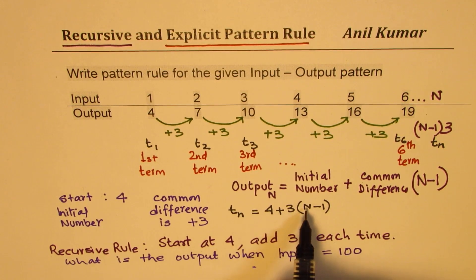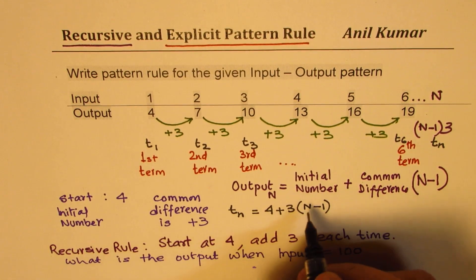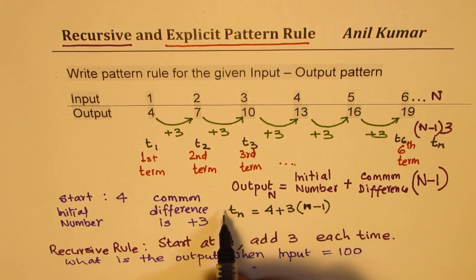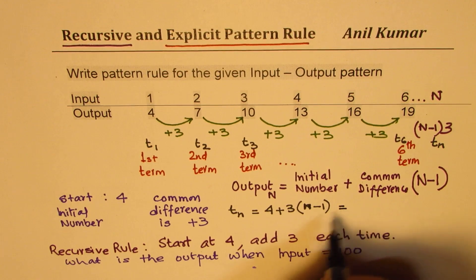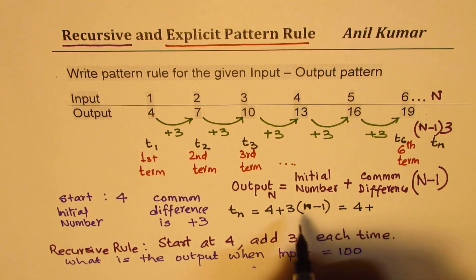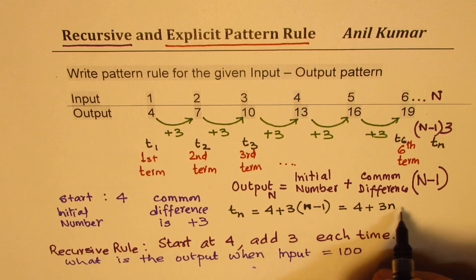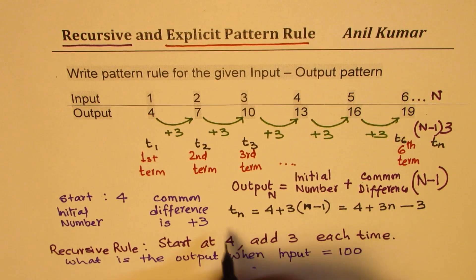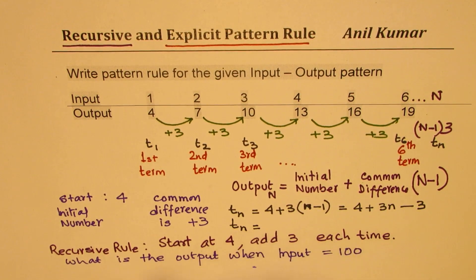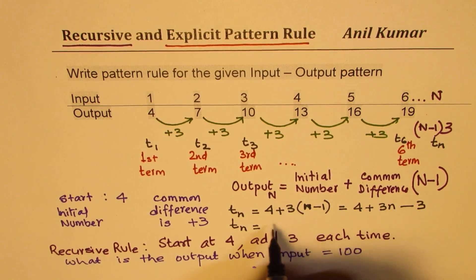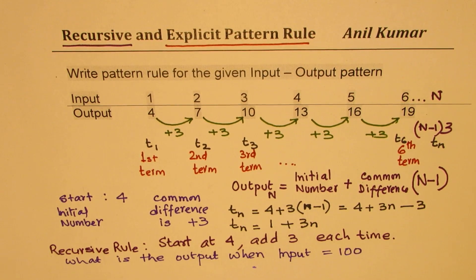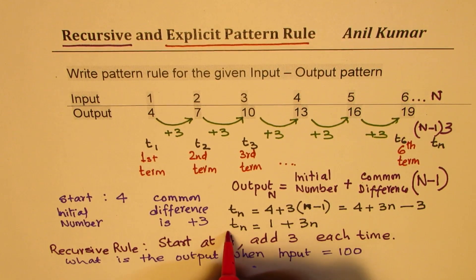So actually, this number n should also be smaller, since I'm using small n. So let me write lowercase n, n minus 1. Now, that becomes a way to give explicit rule. Now, I could simplify this, which is 4 plus 3n minus 3 times 1 is minus 3. And that can be simplified. And nth term can be written as 4 minus 3 is 1 plus 3 times n. So that becomes simplified form of our explicit rule.